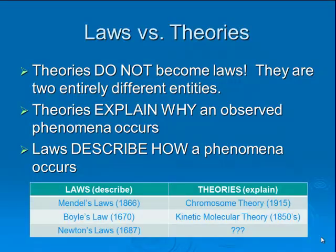Here are some examples of laws versus theories. Mendel's laws — like the principles of dominance, recessiveness, and segregation — are explained by the chromosome theory. The principle of segregation says you get one gene from your mom and one gene from your dad. This is explained by the fact that during meiosis, all the chromosomes line up in the middle of the cell, then the chromosomes separate, and those chromosomes carry those genes. That's what causes those genes to segregate — and that's the chromosome theory explaining why you only get one gene from each parent.